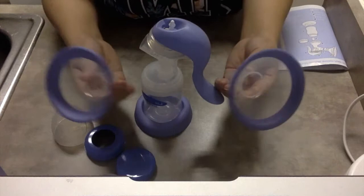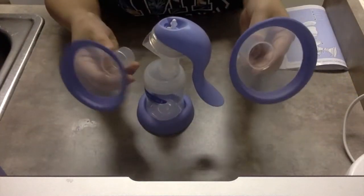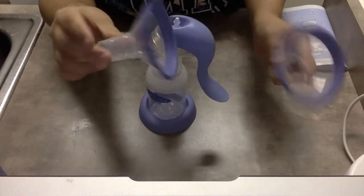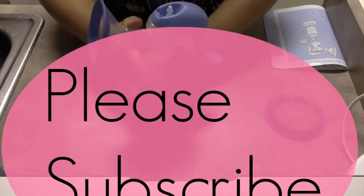And then whatever flange is the best size for you, try them out. But this is the one I use, the smaller one. So this just goes right here. And that's your assembly.